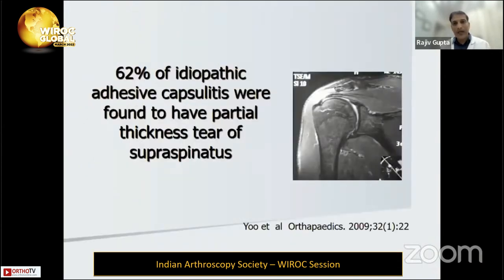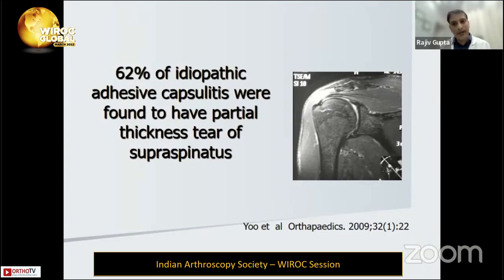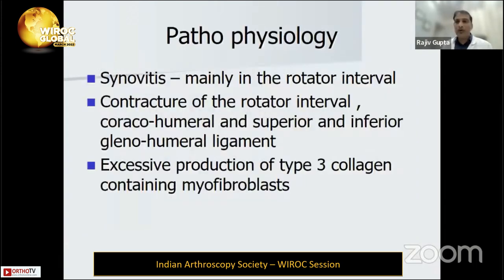In clinical practice, patients often come with MRI scans showing partial thickness tears alongside adhesive capsulitis. This is a real challenge — if you put your scope in such cases you will end up in a problem. When MRI reporting shows adhesive capsulitis as the primary diagnosis, don't give importance to partial thickness tears — they may just be signal intensity changes.